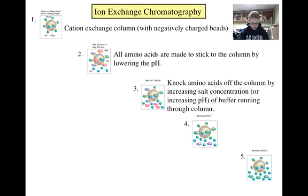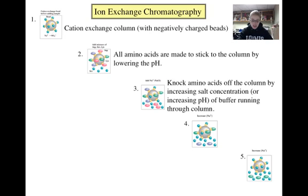Step 3 is to start knocking the amino acids off of the column. This can be done in one of two ways. You can either increase the salt concentration, or you can change the pH of the buffer running through the column. The cation of the salt will compete with the positively charged amino acids for the negatively charged beads, causing those amino acids with the strongest positive charge to stay on the column the longest. The other way to knock amino acids off the column is to increase the pH of the buffer, at which point the functional groups on the amino acids will begin to deprotonate, making the amino acids less positively charged.